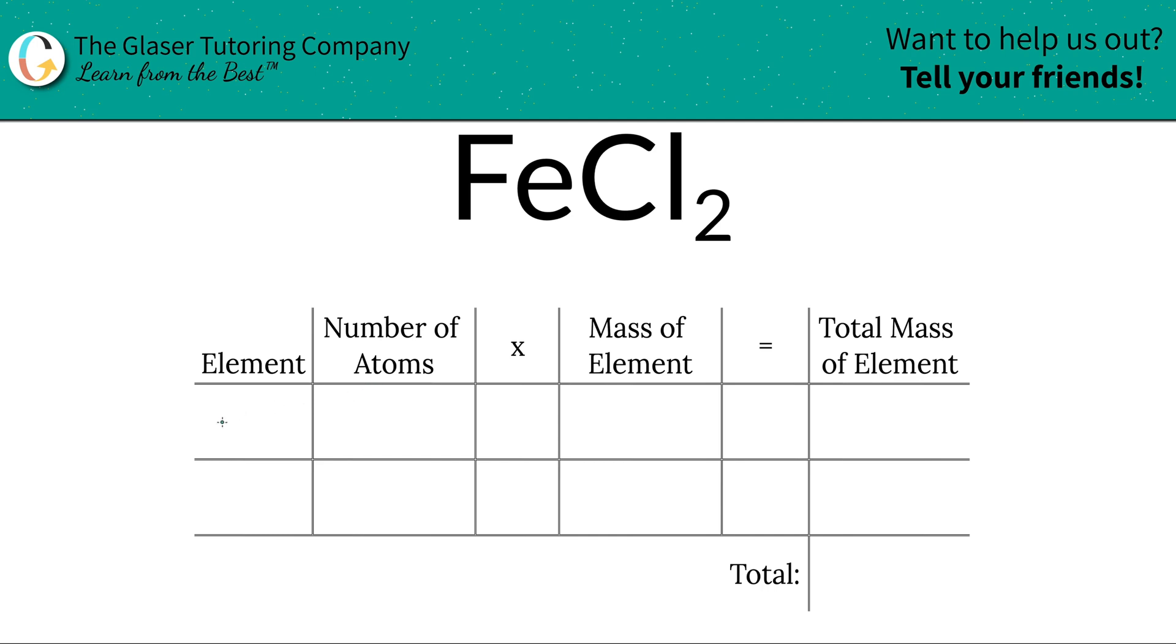So the first thing we're going to do is write down the elements that we see in the compound. So we see iron, Fe, and we see chlorine, Cl.